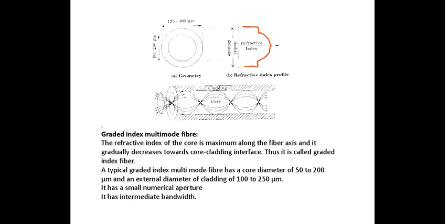This is about the graded index multi-mode fiber. The core diameter is 50 to 200 micrometers and cladding is 100 to 250 micrometers. The numerical aperture is smaller, meaning smaller light gathering capability. It has an intermediate bandwidth — a certain frequency range of light waves it can handle.